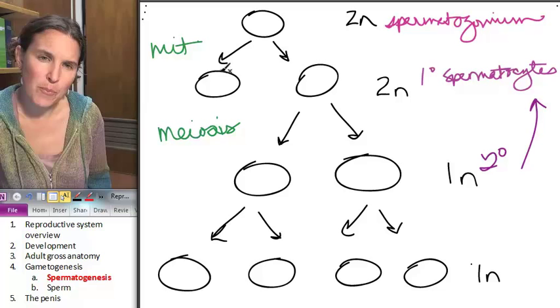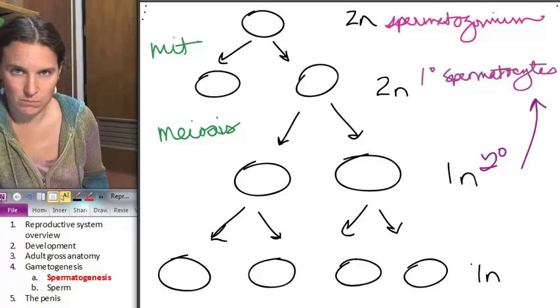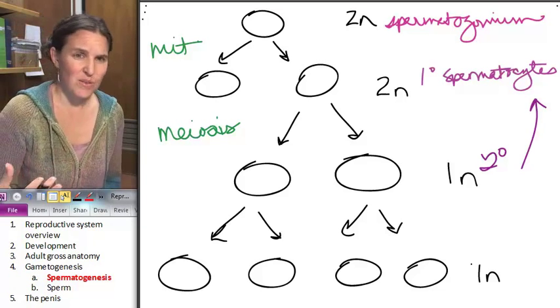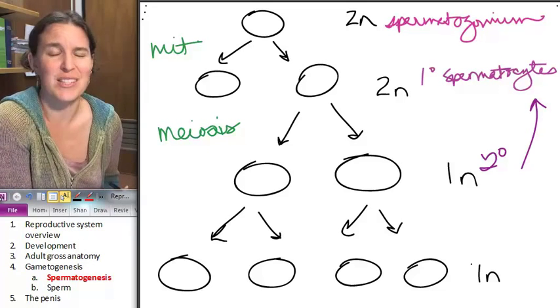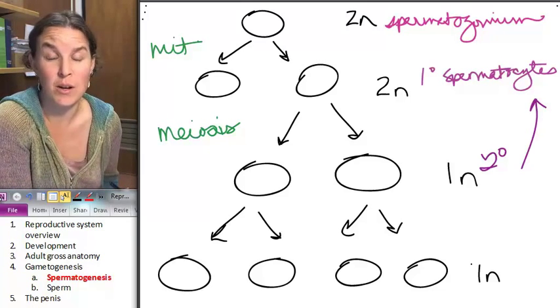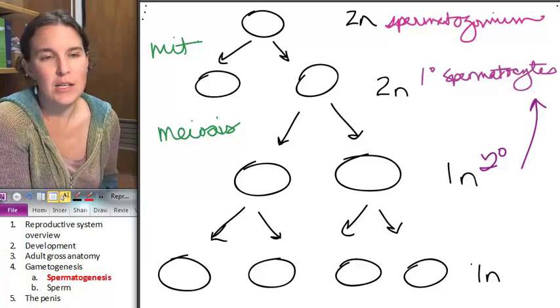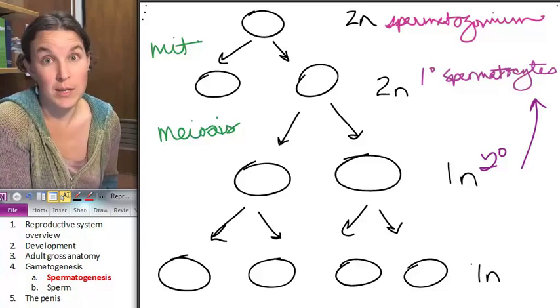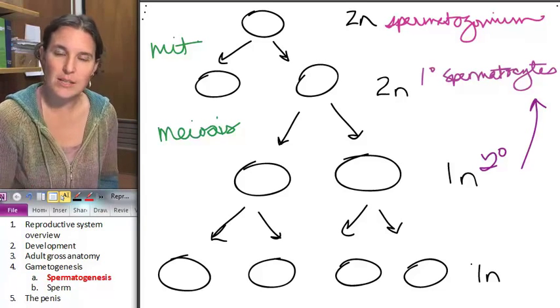Up here with my primary spermatocyte, why am I not drawing that one going through the whole process? Because, dude, the fellas make like five gajillion sperm every second. It's ridiculous the number of gametes they are producing constantly. I'm not going to draw every single gamete that is produced in a fella. Just giving you a little example here.